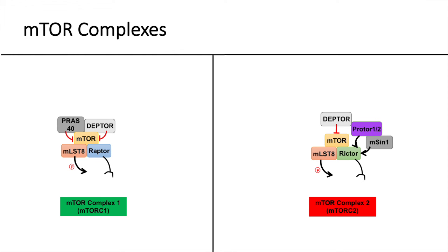As you can see, the two complexes are similar in some ways, but differ in their regulation and their ability to bind to certain targets. There are also two drugs worth knowing: TORIN and rapamycin, which act to inhibit these complexes. TORIN typically inhibits both complexes, whereas rapamycin is typically only inhibitory of complex 1, with very marginal inhibition on complex 2.